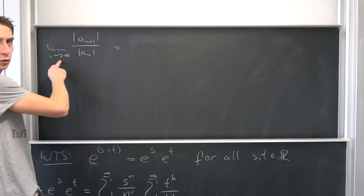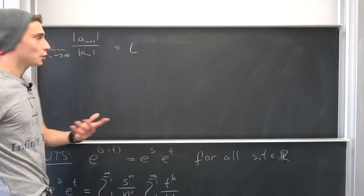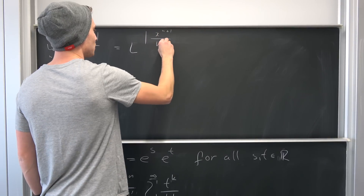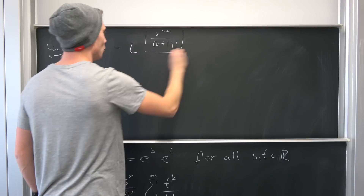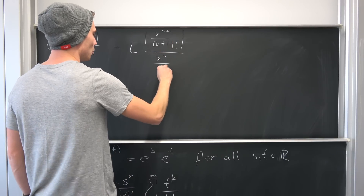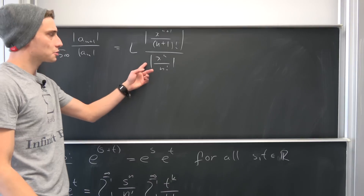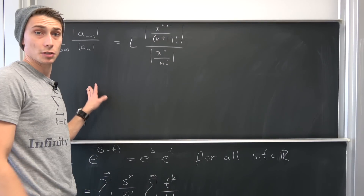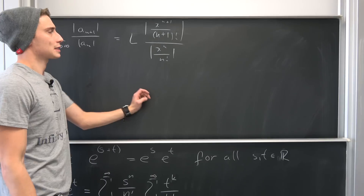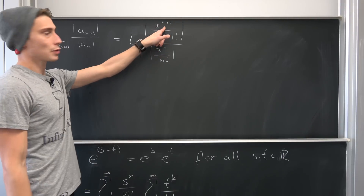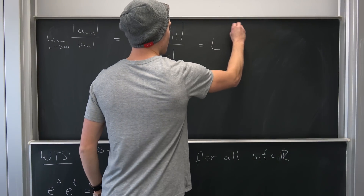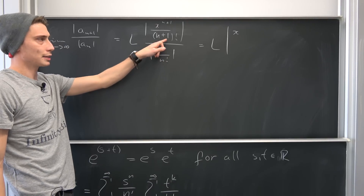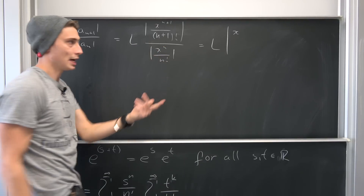I'm going to refer to this limit as capital L. We are going to have x to the n plus 1 power over n plus 1 factorial, divided by x to the n power over n factorial, with absolute values. You can distribute the absolute values since the expression is multiplicative, and you will notice that x to the n power cancels out, leaving an x on top, while n factorial and n plus 1 factorial cancel down to an n plus 1 on the bottom.